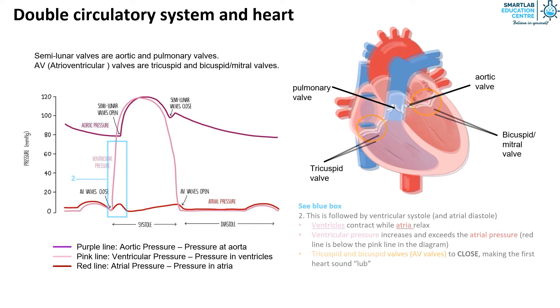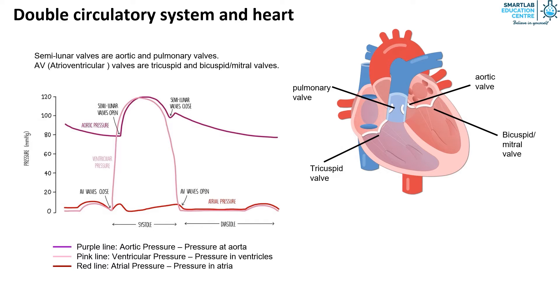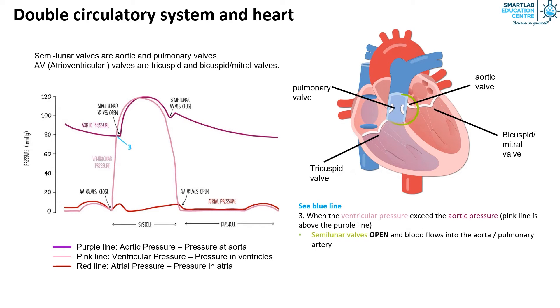In the third stage, the ventricular pressure exceeds the aortic pressure, as seen in the graph where the pink line is above the purple line. This causes the semilunar valves to open and blood flows into the aorta or pulmonary artery.